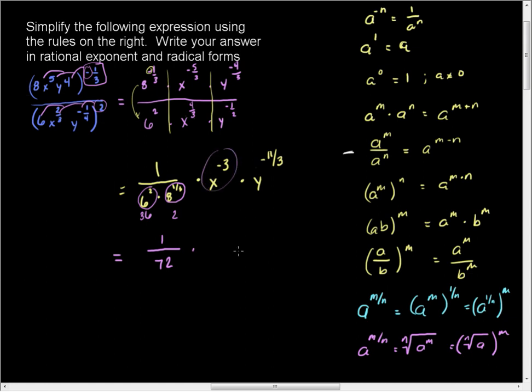And x to the negative three is going to give me one over x cubed. y to the negative eleven-sixths is going to give me one over y to the eleven-sixths.